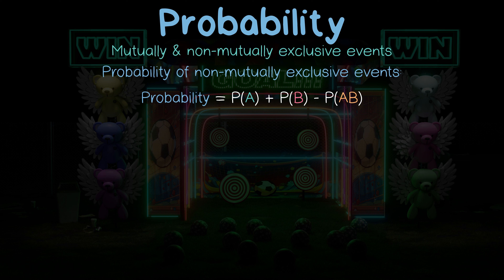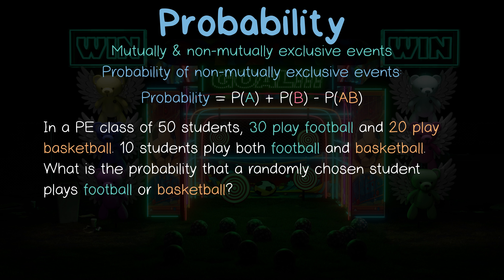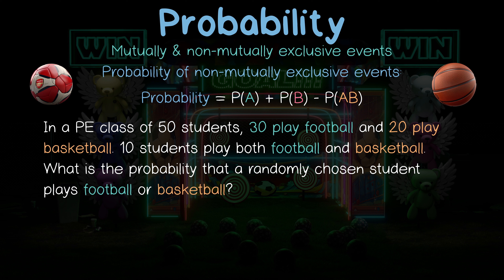Let's try one more example. In a class of 50 students, 30 students play football, 20 play basketball, and 10 play both football and basketball. What is the probability that a randomly chosen student plays football or basketball? We have an overlap, so we know that it's non-mutually exclusive, and this occurs with the students that play both sports.